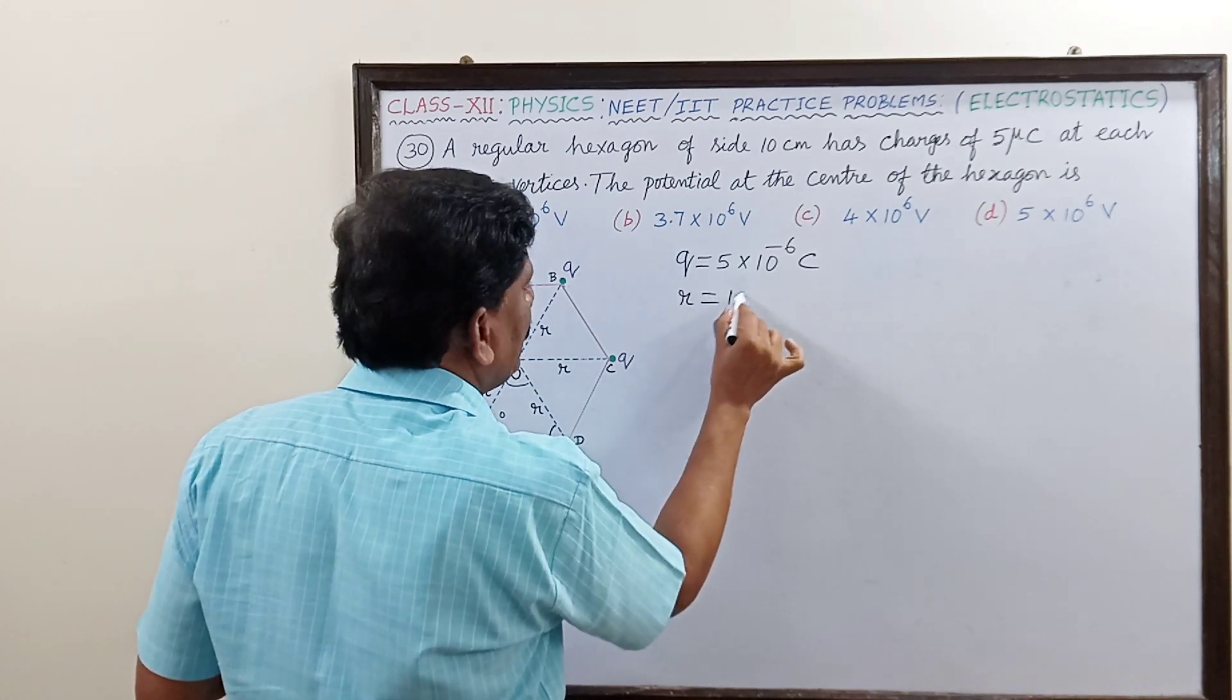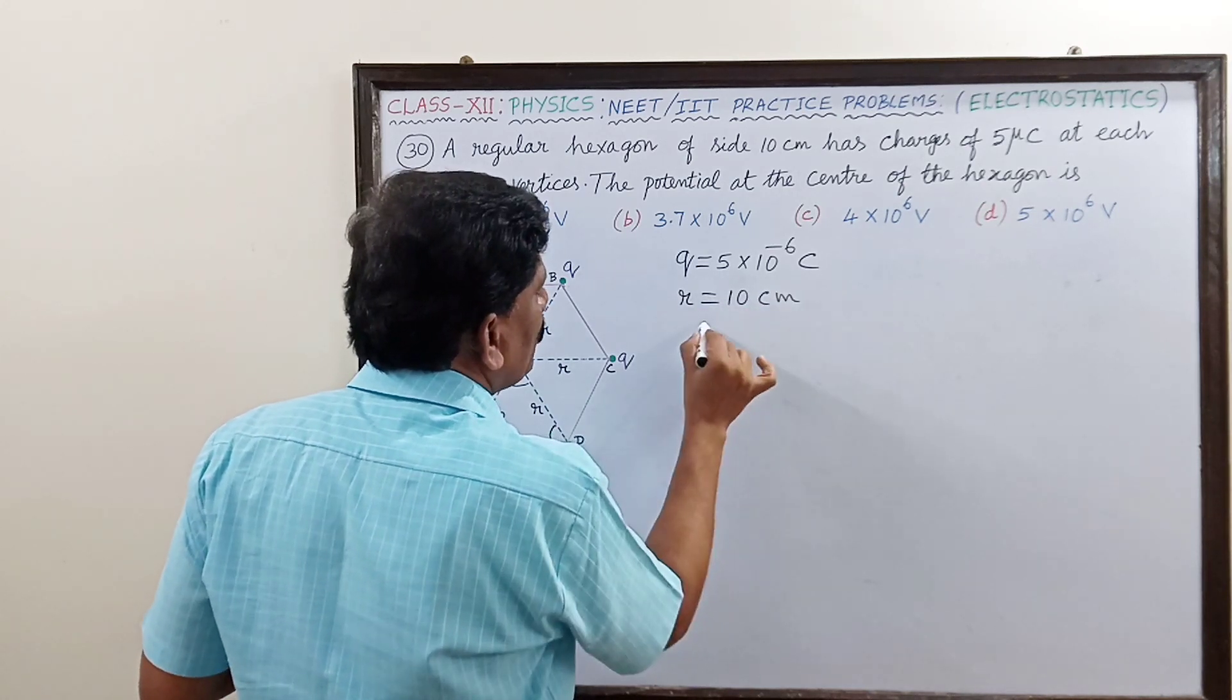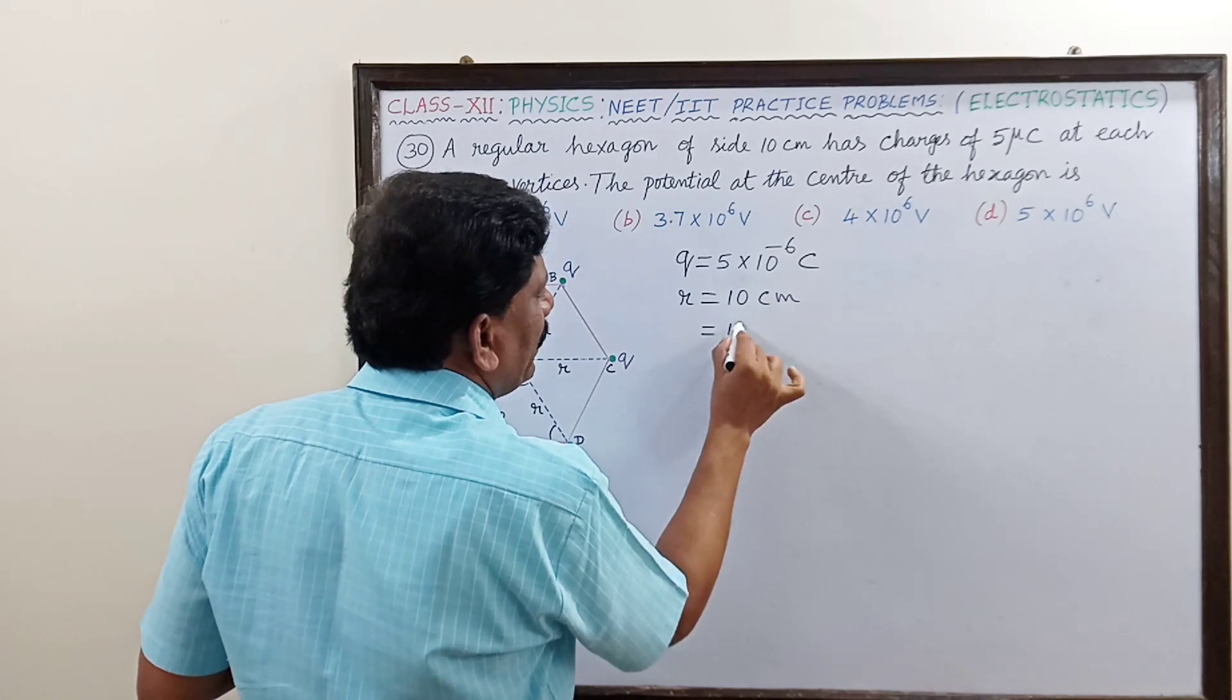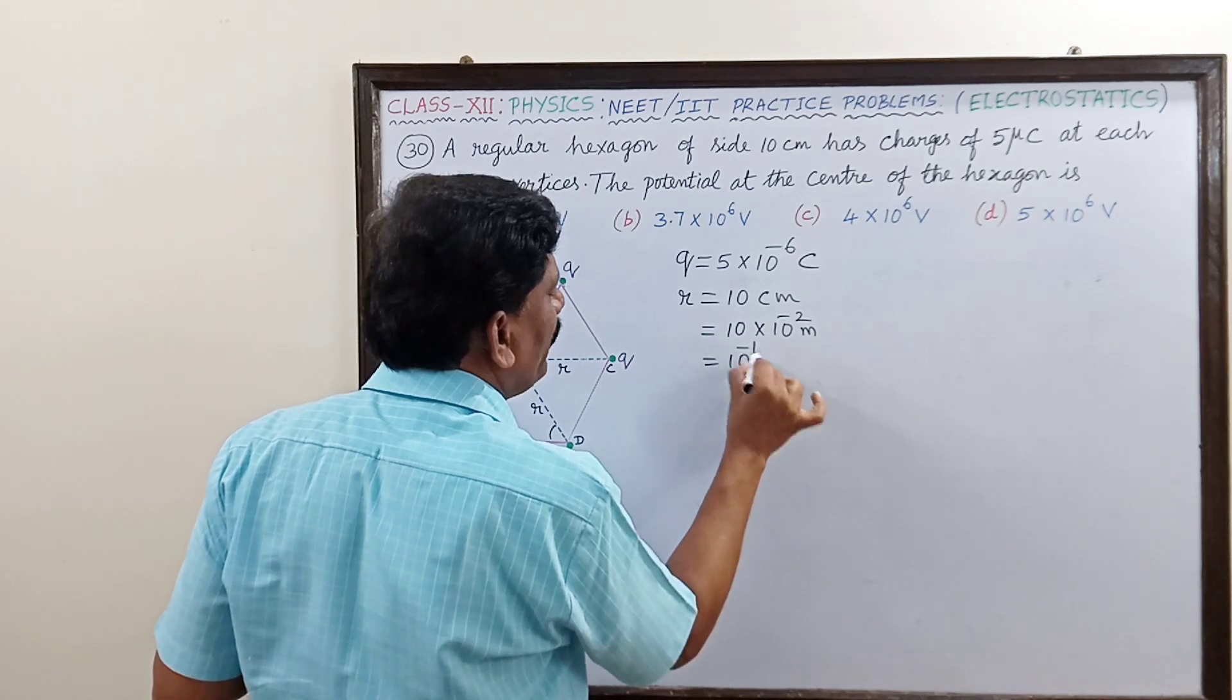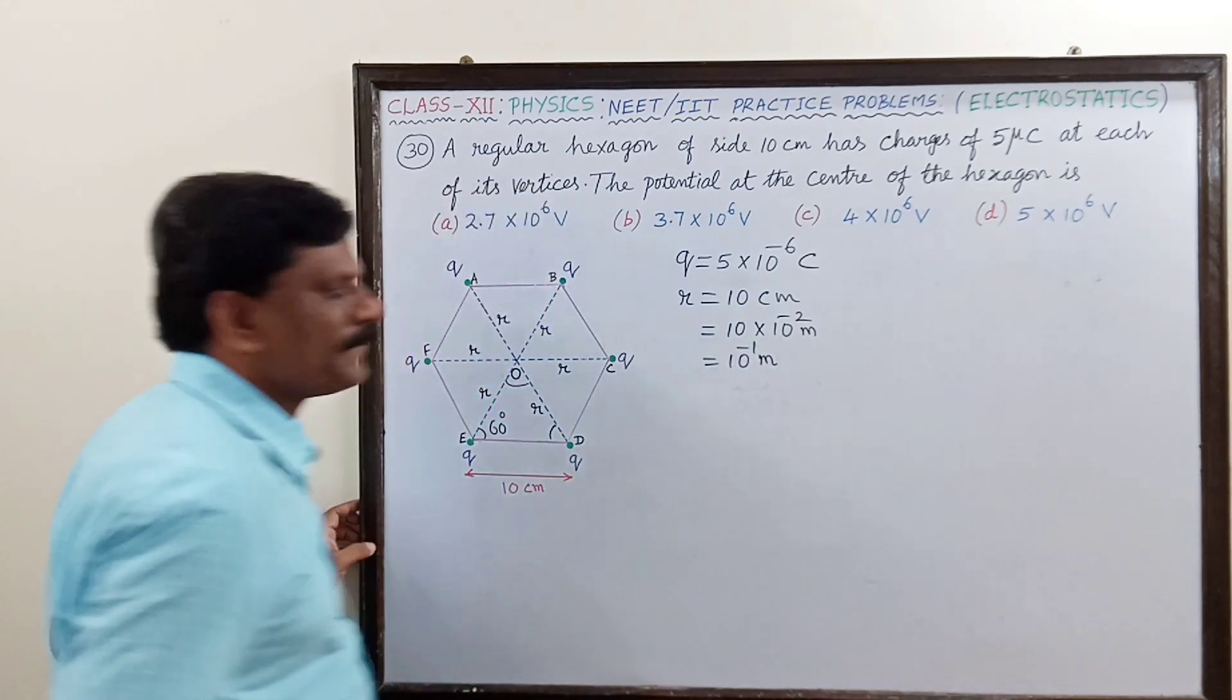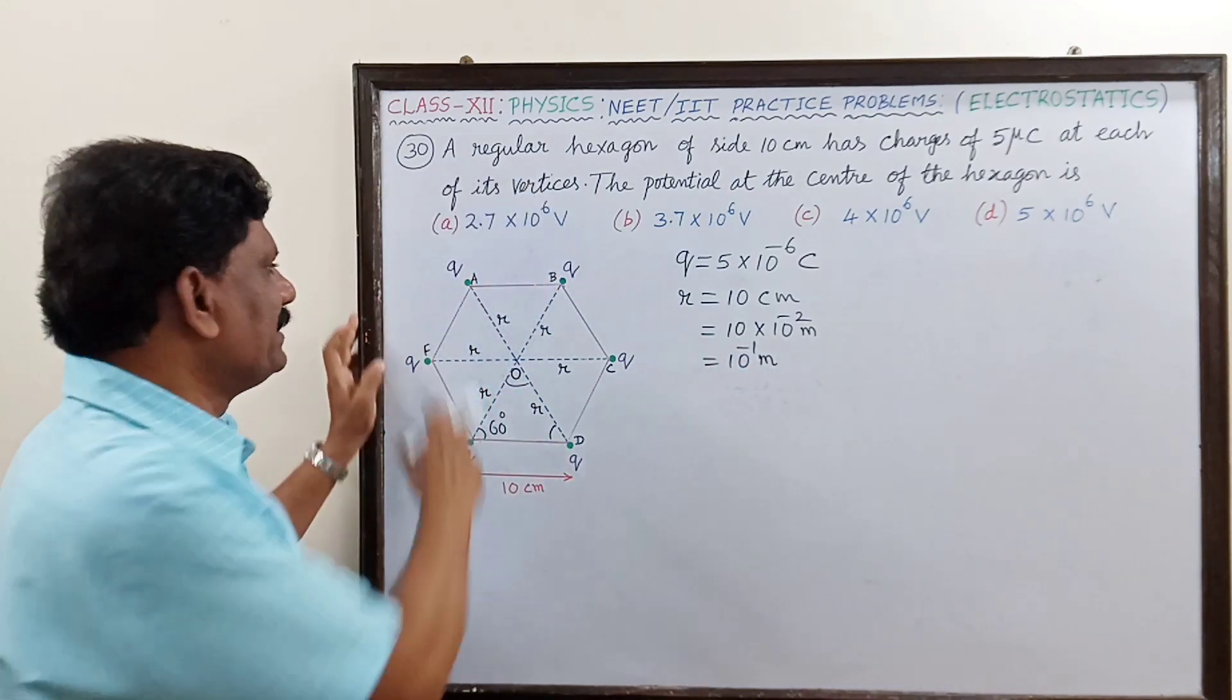That distance r is equal to 10 centimeter, so this is equal to 10 into 10 to the power of minus 2 meter, so this is equal to 10 power minus 1 meter. All charges are located at the same distance from the center.